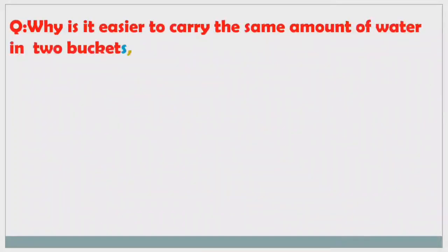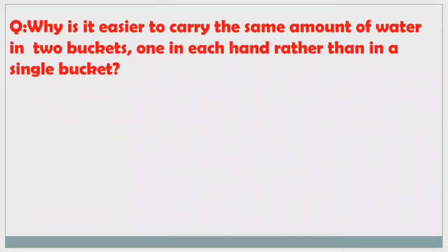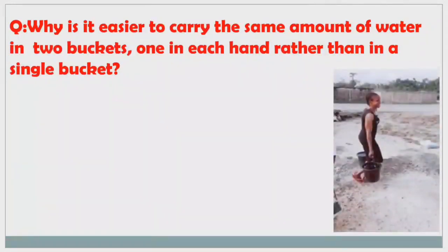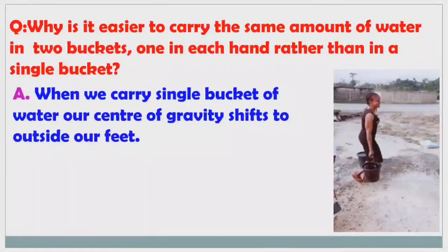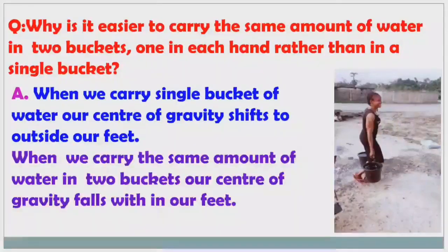Another textbook question: Why is it easier to carry the same amount of water in two buckets, one in each hand, rather than in a single bucket? When we carry a single bucket of water, our center of gravity shifts to outside our feet, so we may fall. When we carry the same amount of water in two buckets, our center of gravity falls within our feet, so it is easy to carry.